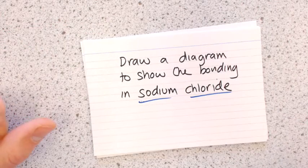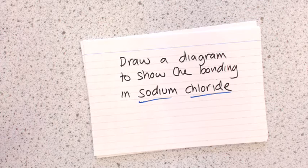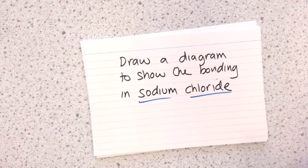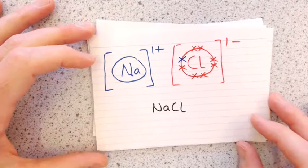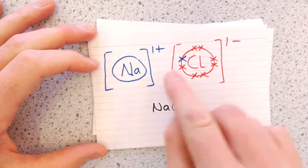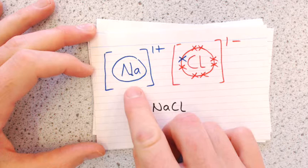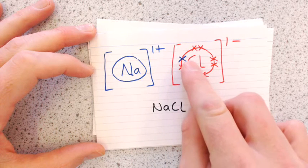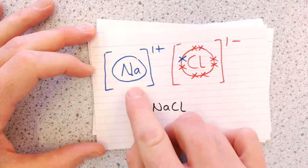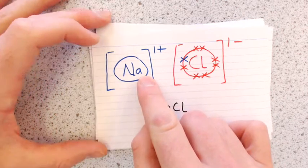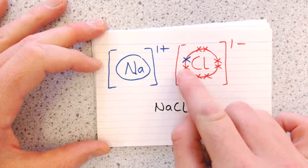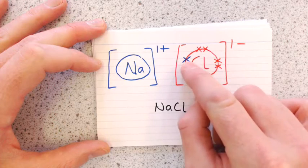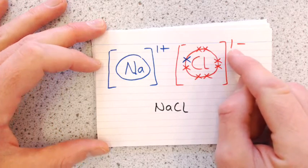Now, a few examples of drawing ionic bonding diagrams. To draw the bonding diagram for sodium chloride: sodium had one electron in its outer shell and has given that electron to the chlorine. The sodium now has no electrons in its outer shell — it's stable — but it's lost an electron, so it's plus one. The chlorine atom had seven of its own electrons, it's gained one from the sodium, so now it has a charge of minus one.